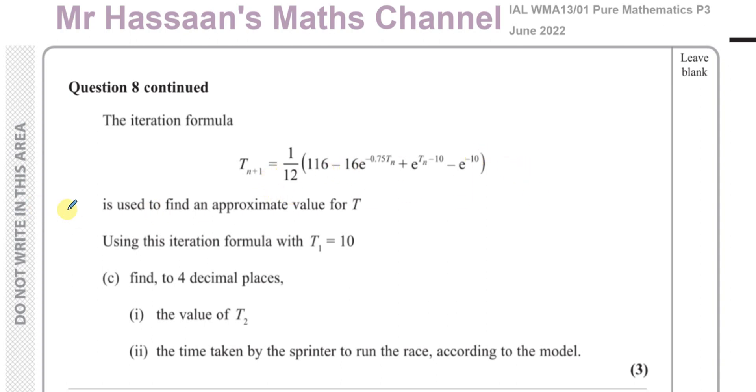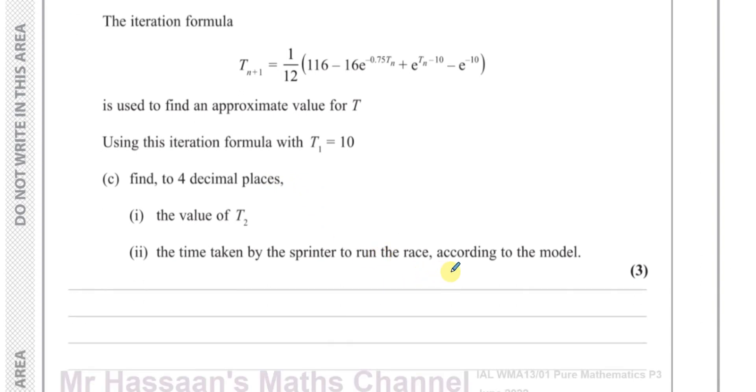This iteration formula is used to find an approximate value for T, which was the time it took for the person to complete the 100 meters race. So using this iteration formula with T_1 equals 10, find to 4 decimal places the value of T_2.